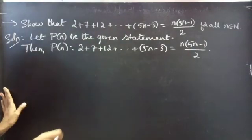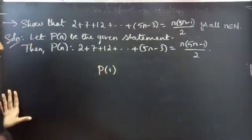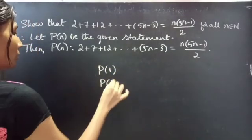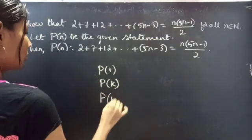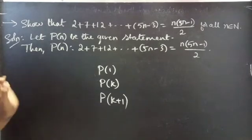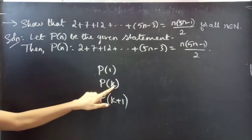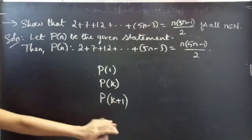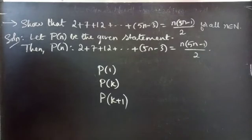Mathematical induction says that P(1) is true, and we assume that P(k) is true, and finally we will show that P(k+1) is true. That is, firstly we will prove the statement is true for n equals 1, and we will assume the statement is true for some k which belongs to natural numbers, and finally we will prove the statement for n equals k plus 1.